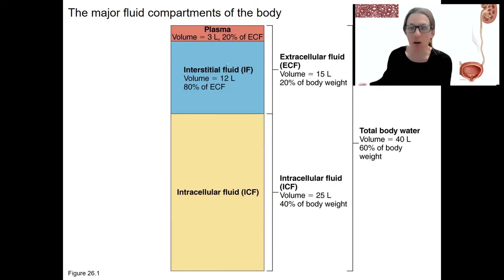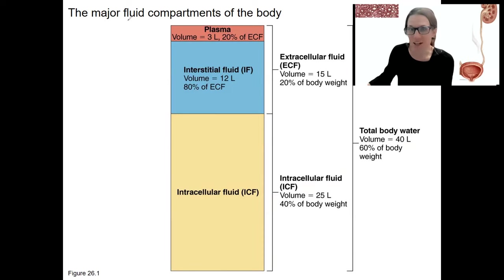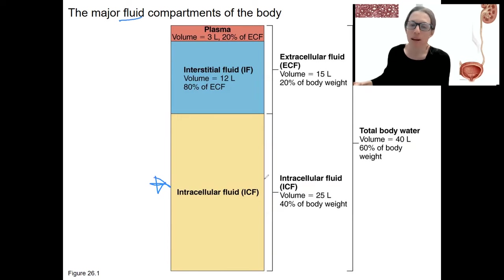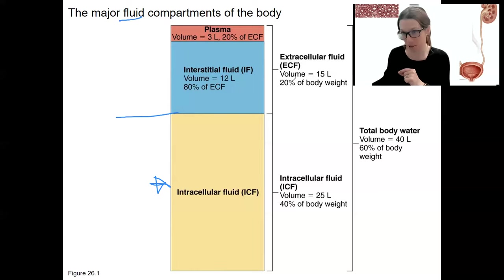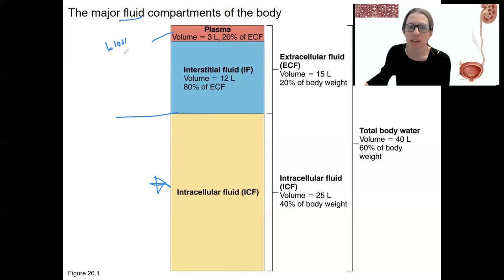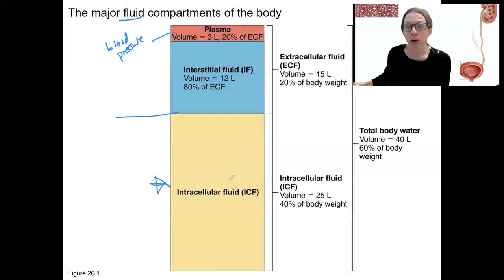First, I want to remind you of the fluid compartments in the body — this is what we need to regulate. Very important to regulate, especially the intracellular fluid, which makes up about 40% of our body weight and is inside our cells. There's also interstitial fluid, and plasma is only 20% of the ECF, which is 20% of our body weight. Plasma is the component of blood that we think about when regulating blood pressure, and it is so important to regulate because it indirectly affects intracellular fluid through osmotic gradients.